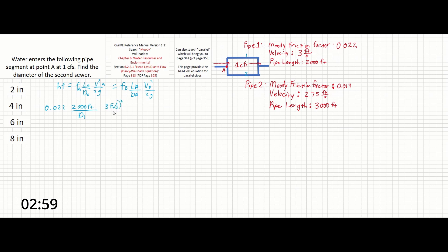squared over 2 times 32.2 feet squared per second equals 0.019 times 3,000 feet of the second pipe length, 0.019 over d2 which is the diameter times